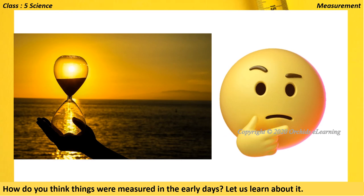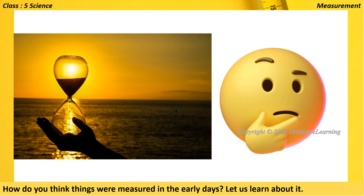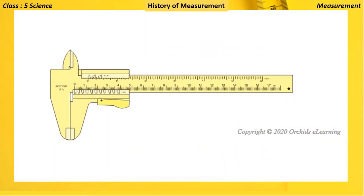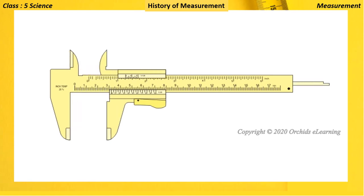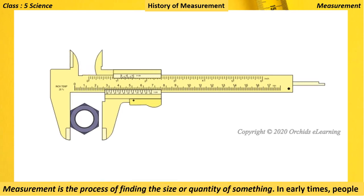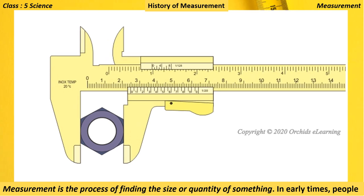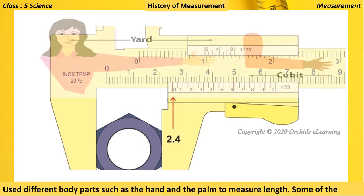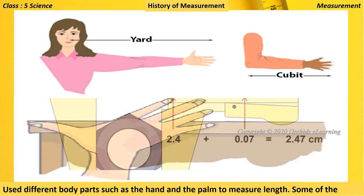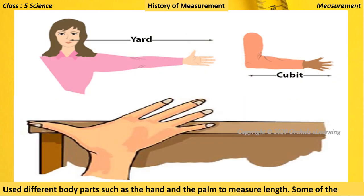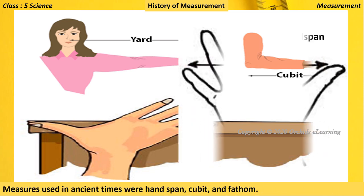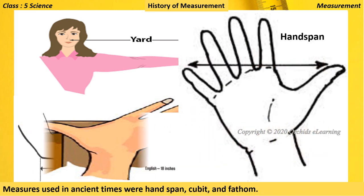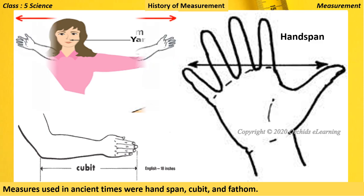History of measurement: measurement is the process of finding the size or quantity of something. In early times, people used different body parts such as the hand and the palm to measure length. Some of the measures used in ancient times were hand span, cubit, and fathom.